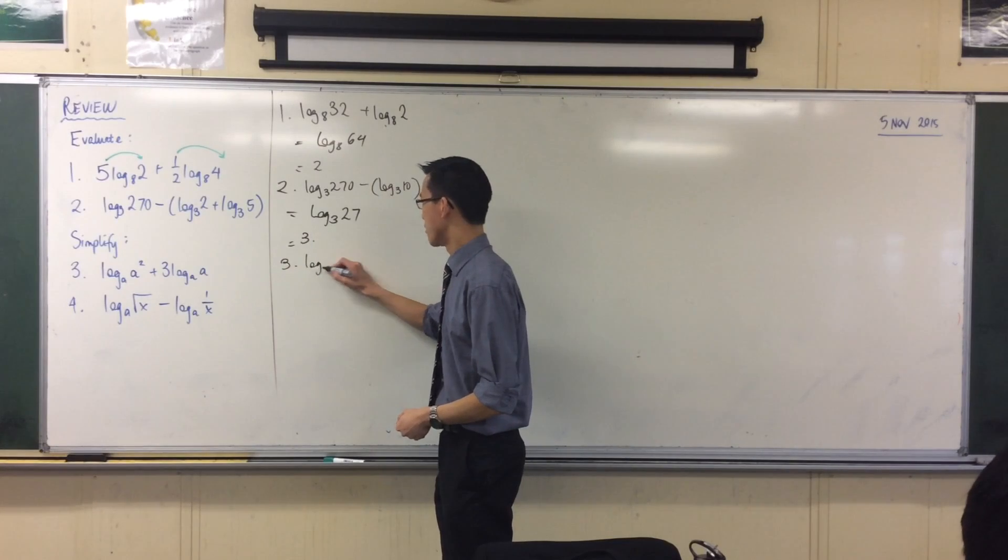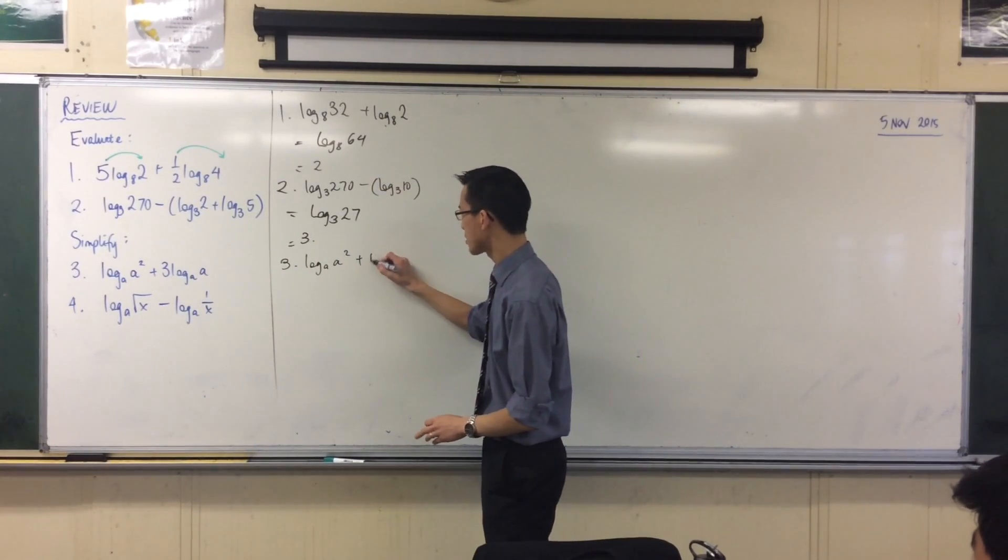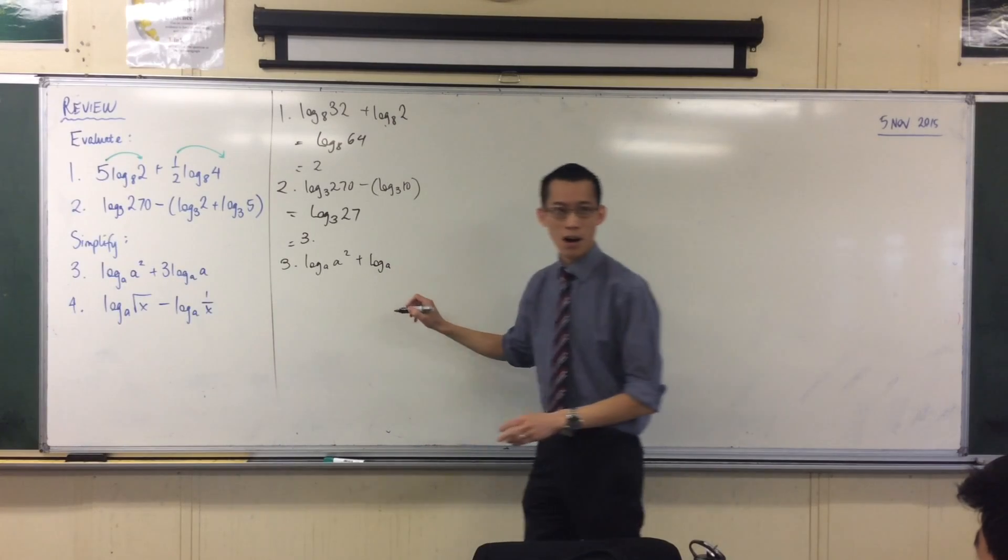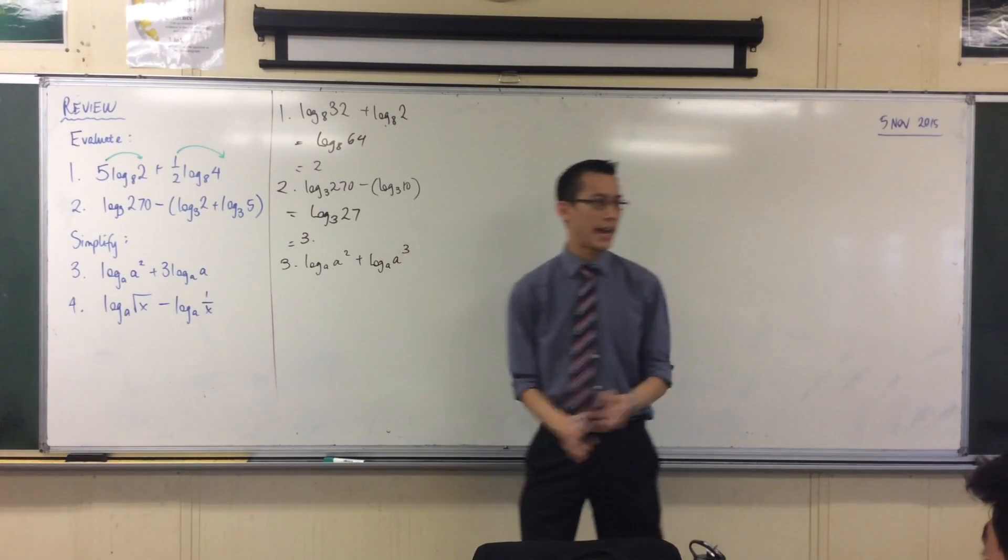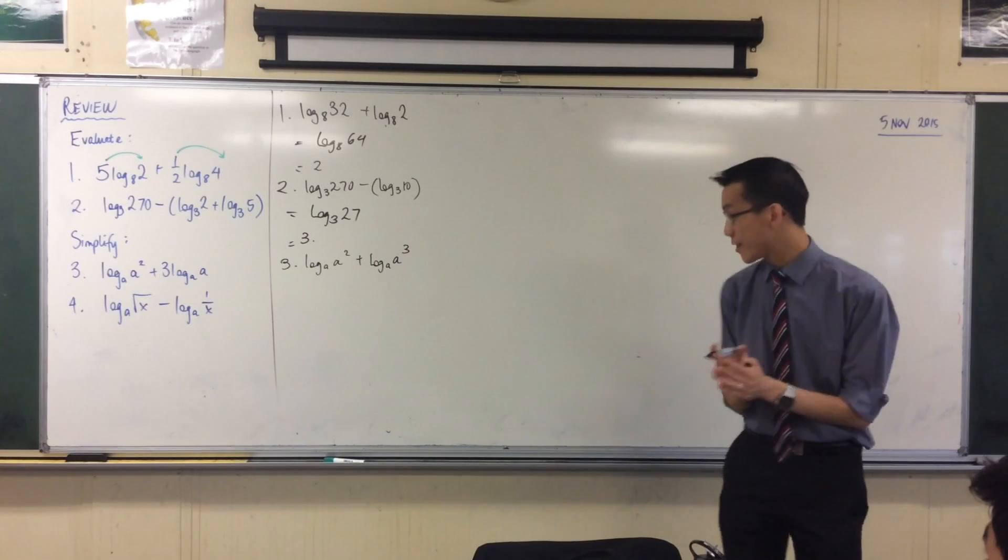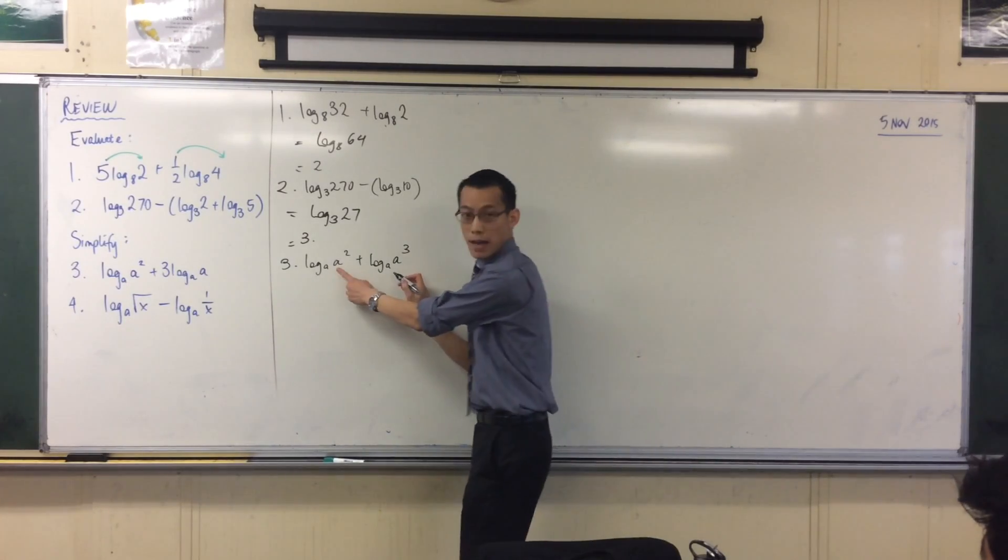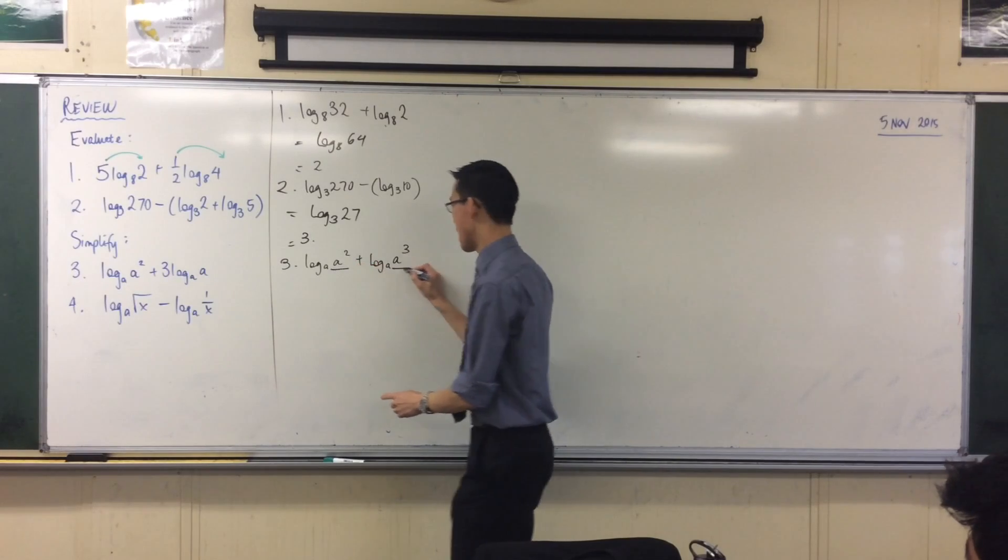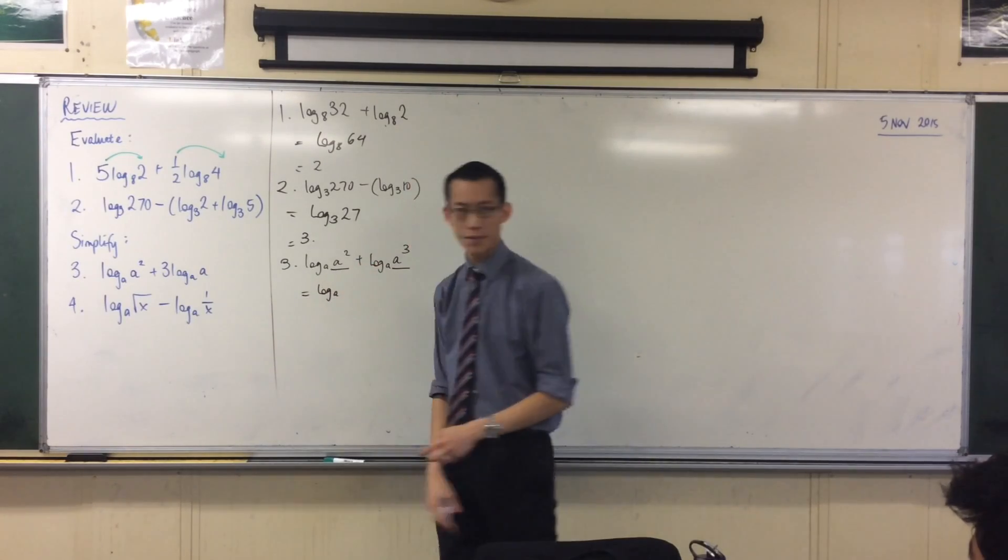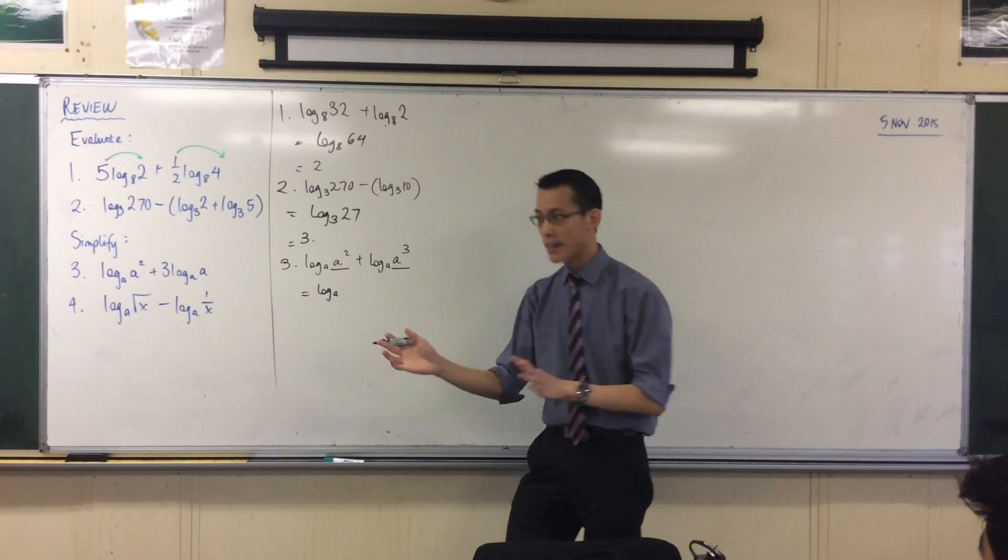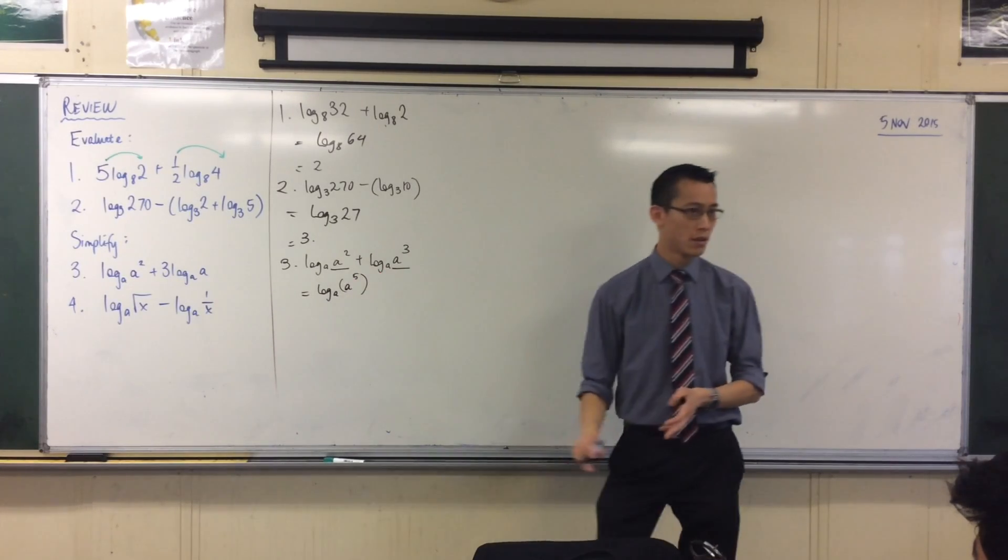So you want to take this 3 and put it up? Should we try that? Alright. So I'm going to get log base a of a squared, just going to leave that guy there, plus log base a of, the 3 is going to come up, it'll be a cubed. Now when I add together logs, we've already established this, I multiply these guys here, that guy and that guy. So I'm going to go log base a of, index laws, a squared times a cubed is a to the power of 5. Like so.